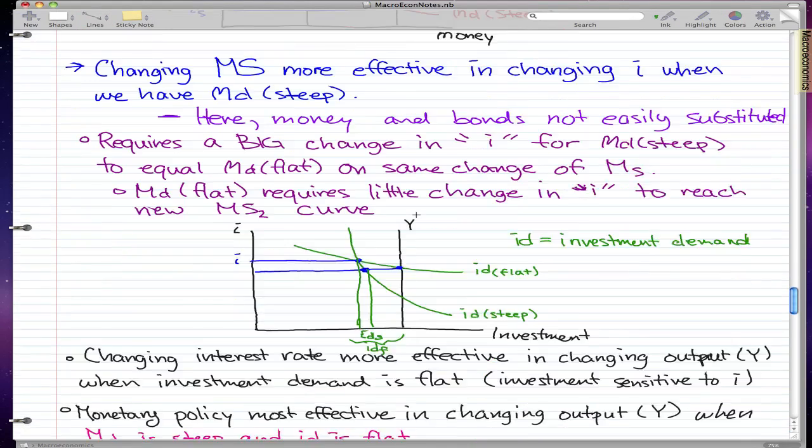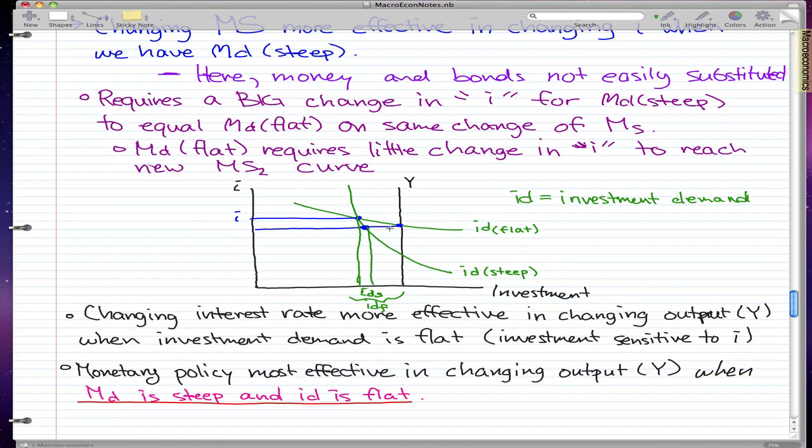That's pretty much all you need to know for this graph. For the next graph, it's pretty much the same thing with some subtle differences. What you need to know is that ID is labeled here as investment demand. Changing the interest rate is more effective in changing the output Y when investment demand is flat.